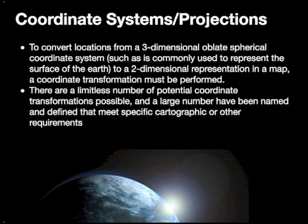Specific coordinate systems and projections are defined for particular applications, and as a result there are essentially a limitless number of potential coordinate transformations available, each representing a mathematical model for the transformation from that three-dimensional oblate spherical coordinate system into a two-dimensional system or vice versa. You will encounter data in a variety of projections, where that information may be available through interrogation of the dataset itself or through the metadata published by the data provider. You may find yourself needing to calculate converted values between one coordinate reference system and another.